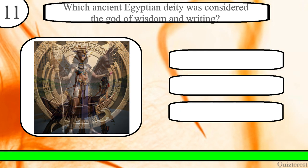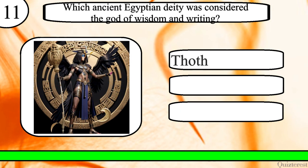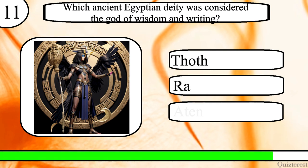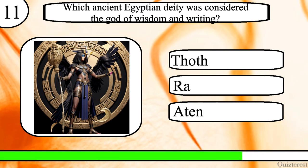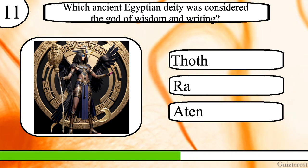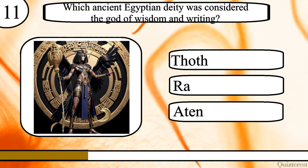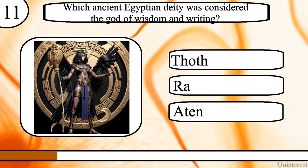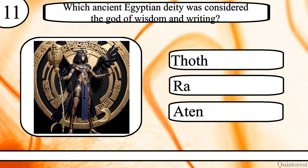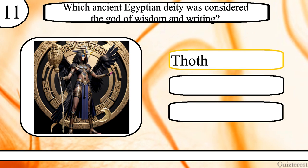Question 11. Which ancient Egyptian deity was considered the god of wisdom and writing? Thoth, Ra or Aten? The correct answer is Thoth.